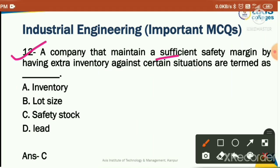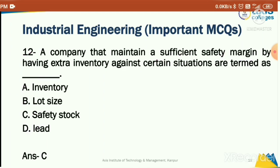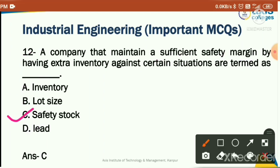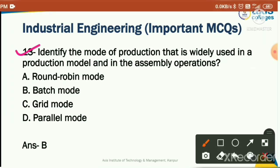A company that maintains a sufficient safety margin by having extra inventory against certain situations is termed as: inventory lot size, safety stock, or lead. The correct answer is safety stock. A company maintains sufficient safety margin so that if any part or material faces a delay, they have safety stock to handle such situations.